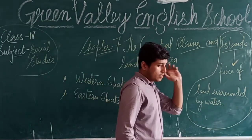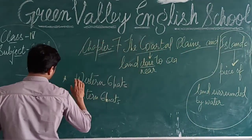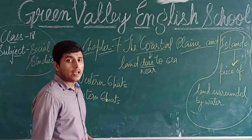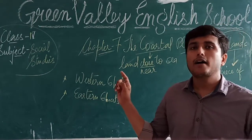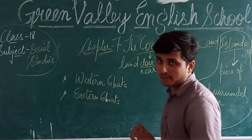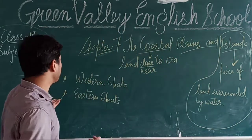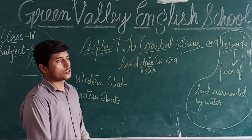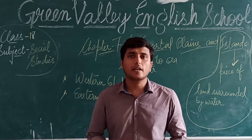When we talk about the coastal plains and the islands, we will be talking about two main parts: the Western part and the Eastern part. As we learned in our last lesson, the peninsular part of India is mainly covered with a southern plateau, and the southern plateau is bordered by these two parts — the Western and Eastern coasts. Let's move on to our book pages to understand this better.